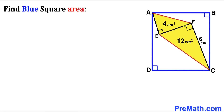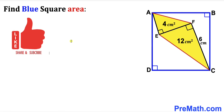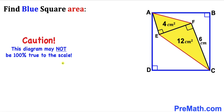Welcome to pre-math. In this video we have two yellow right triangles — triangle AEF and right triangle EFC — fully confined in square ABCD. The area of right triangle AEF is 4 cm², the area of right triangle EFC is 12 cm², and side length FC is 6 cm. Our task is to calculate the area of the blue square ABCD. Please note this figure may not be 100% true to scale.